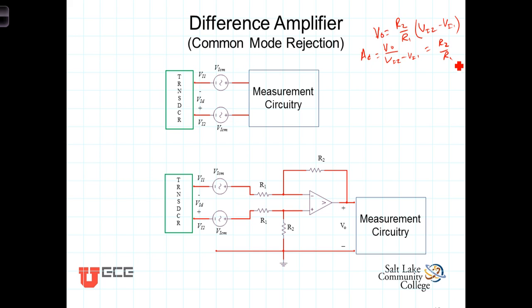Now there's a very convenient property known as common mode rejection that results from this differencing amplifier. As we've mentioned, a common application of differencing amplifiers is in automation and instrumentation systems where the signal of interest arises from some type of a transducer.